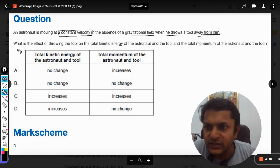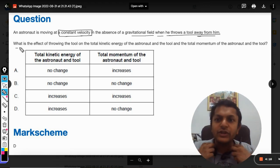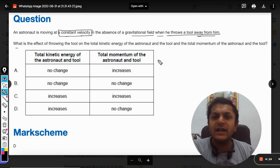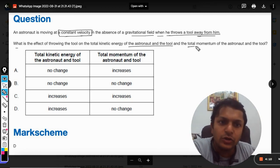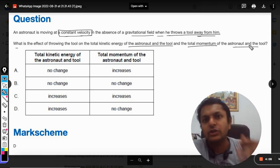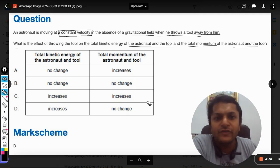Now, what is the question? What is the effect of throwing the tool on the total kinetic energy of the astronaut and the tool and the total momentum of the astronaut and the tool? So as per the momentum is concerned,